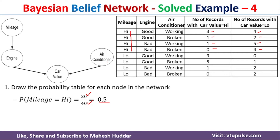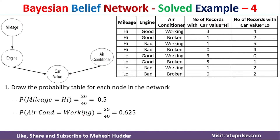Now we will consider the air conditioner node. The probability of air conditioner being working — we consider only the working examples. Adding them up: 3 plus 1 is 4, plus 9 is 13, plus 1 is 14, plus 4 is 18, plus 5 is 23, plus 1 is 24, plus 1 is 25. So there are 25 working examples out of 40, giving 0.625. The probability of air conditioner being broken is 1 minus 0.625.